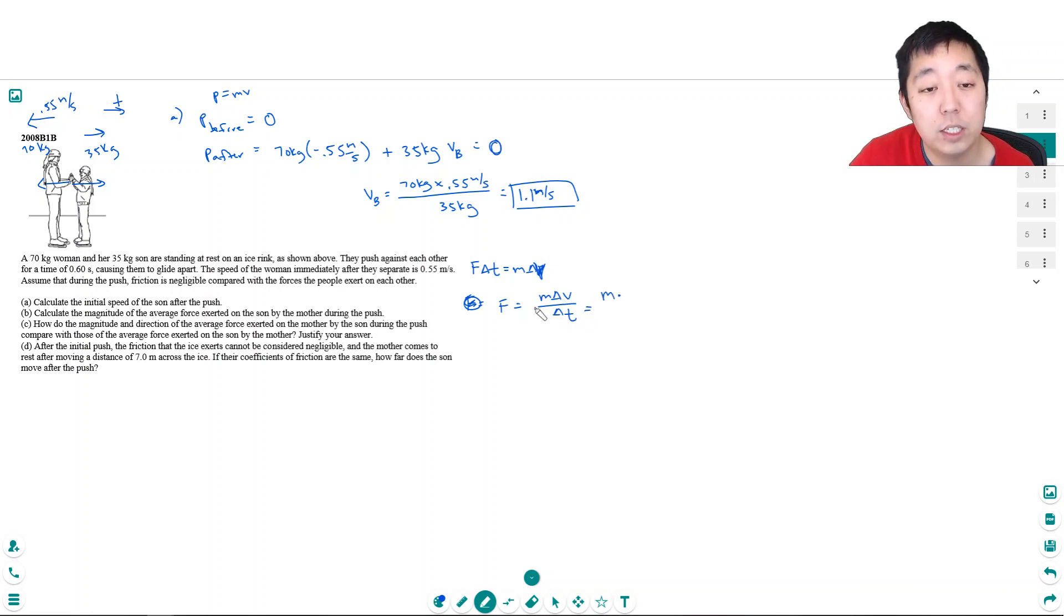His change in momentum: he goes from zero momentum to 1.1 meters per second. So this would be 35 kilograms times 1.1 meters per second divided by how long the force acted.